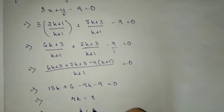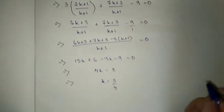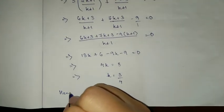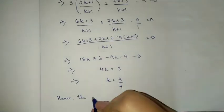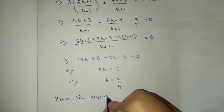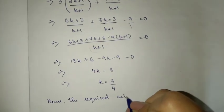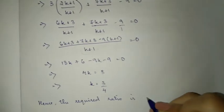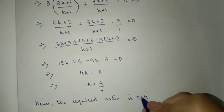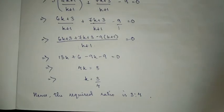Hence, the required ratio is 3 is to 4. Since k is to 1 equals 3 is to 4, the required ratio is 3:4.